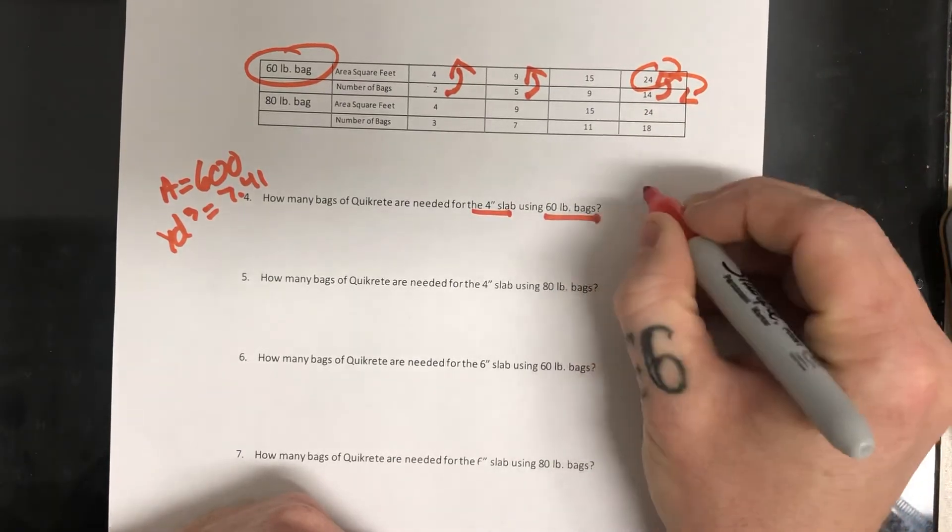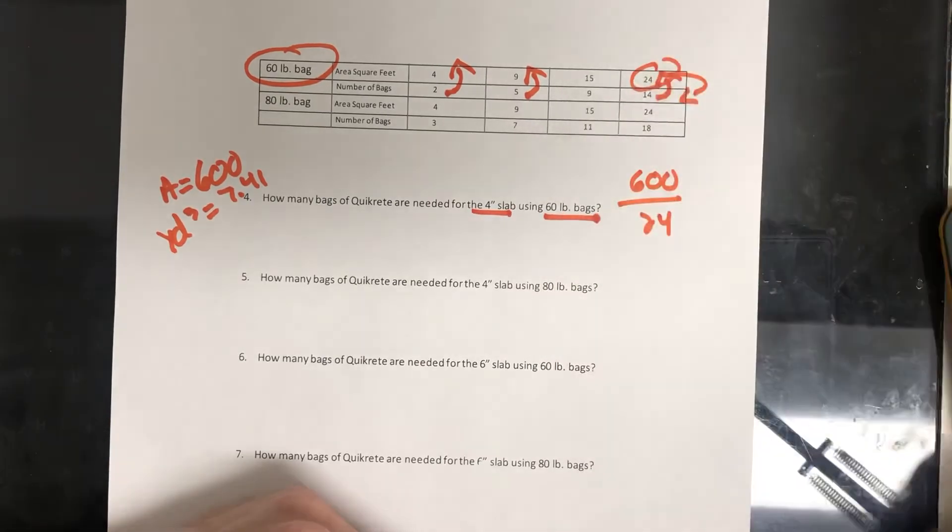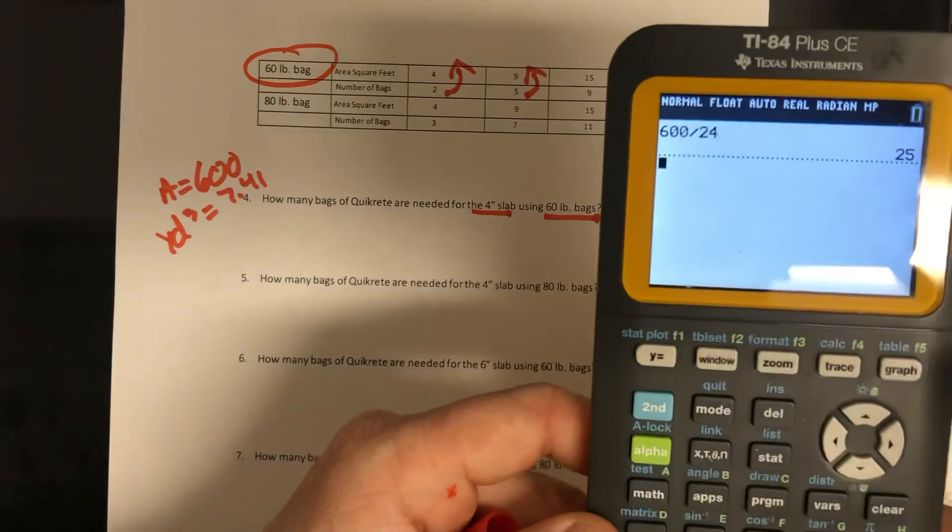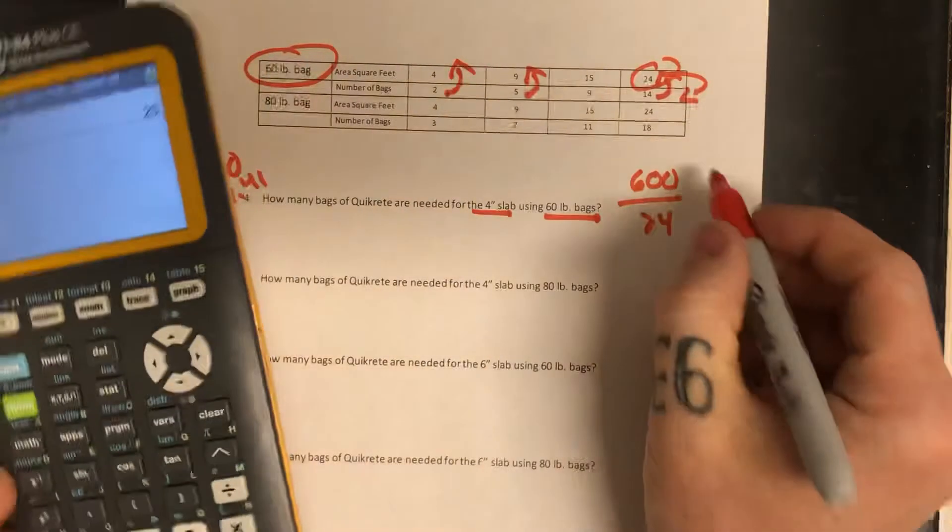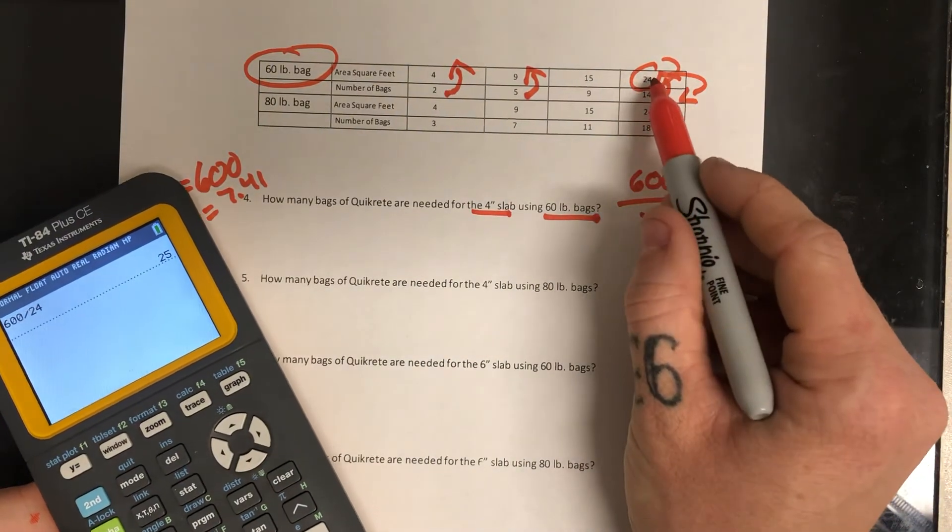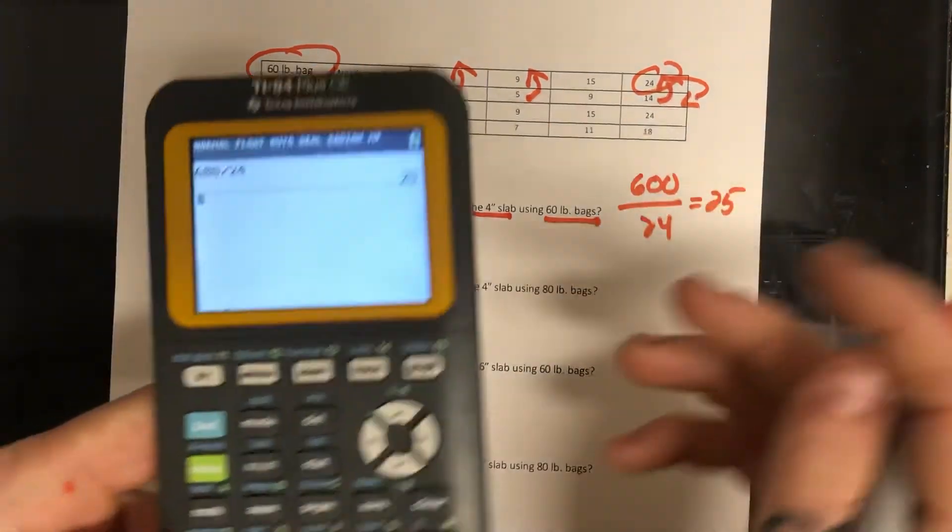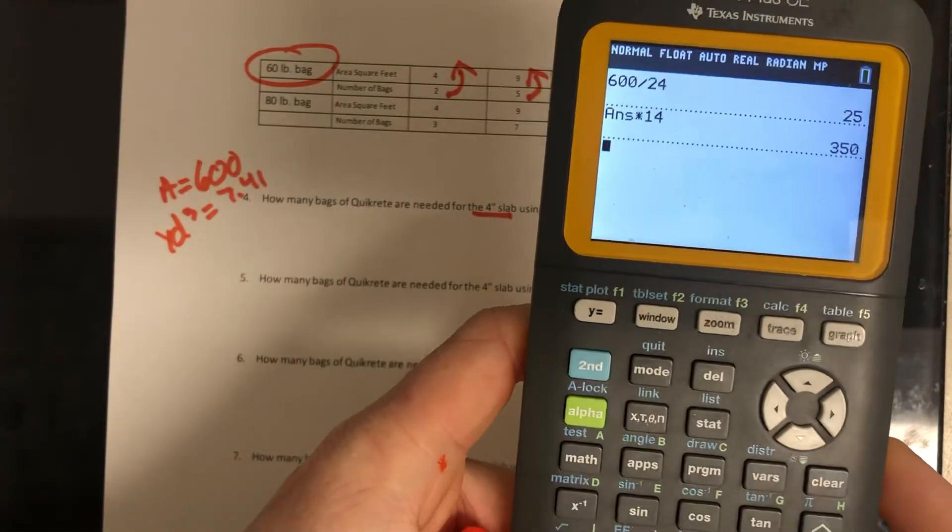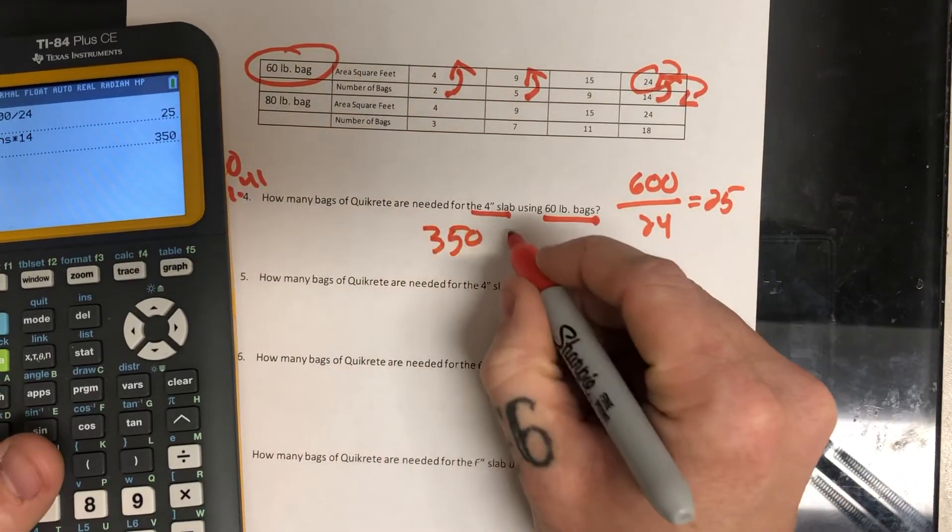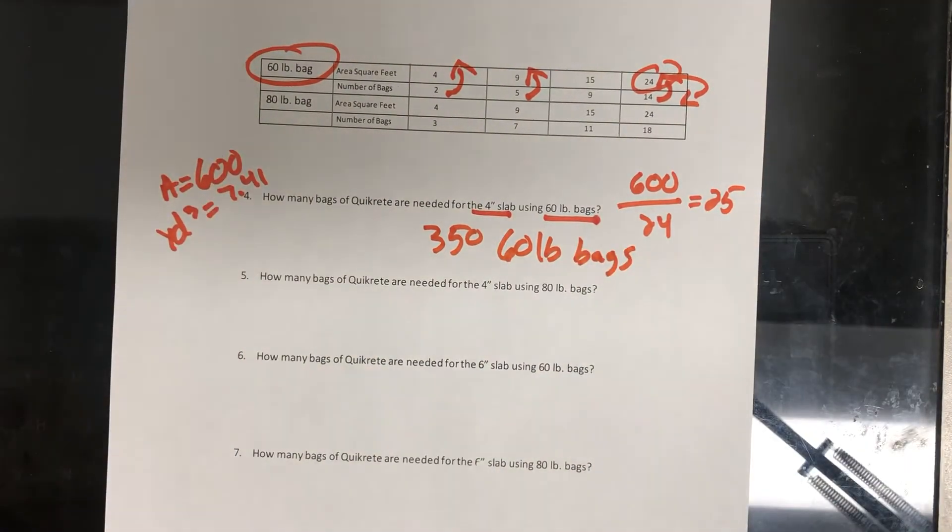So what we're going to do is we're going to take the square footage of the highest one. So 24 square feet equals 14 bags. So we're going to do 600 because that's our area divided by 24 and that gives us 25. So we're going to need 25 units of this but 24 square feet comes from 14 bags. So if we need 25 of them, 25 times 14 is going to give you 350. So you need 350 60 pound bags.